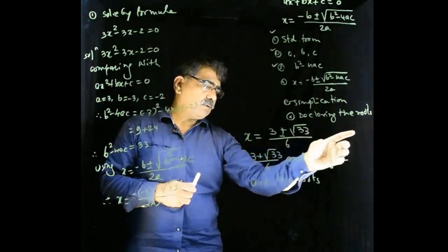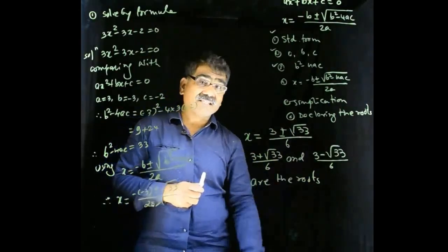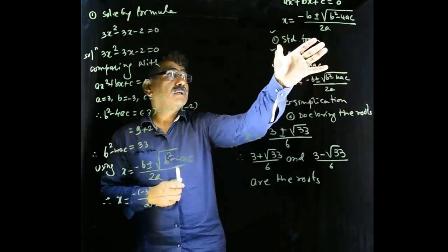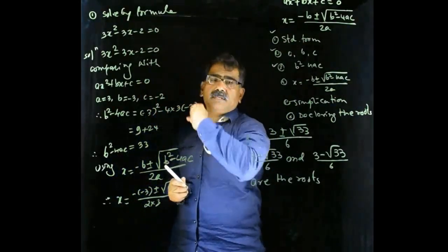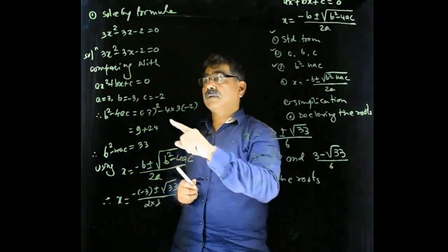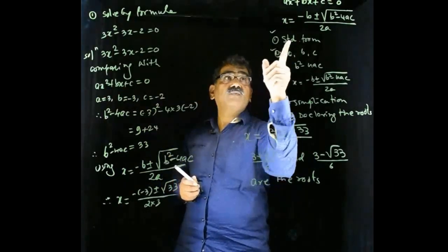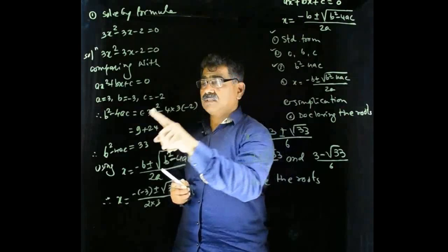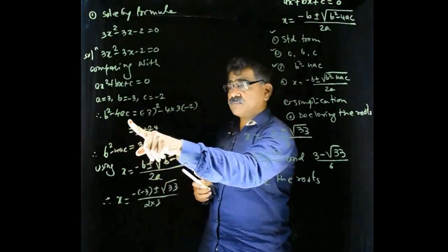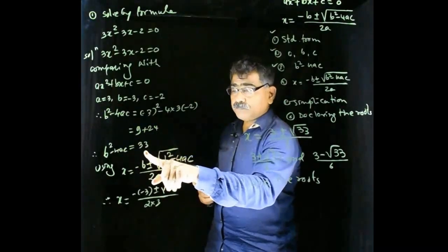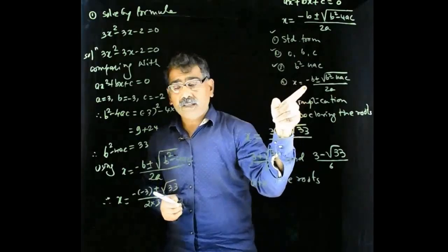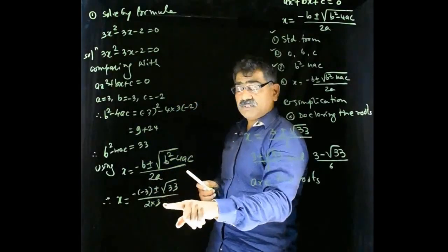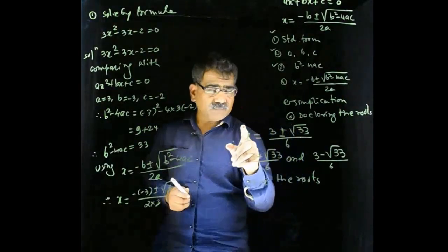Declaring the roots. So, 6 steps are there. First step, writing in the standard form. If it is not, write it in the standard form. We are dealing with ax square plus bx plus c. Why? To get values of a, b, c. Second step. Third step, finding value of b square minus 4ac that I did here. Then, using this formula, I wrote here formula, substituted values and simplified.